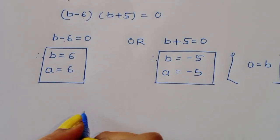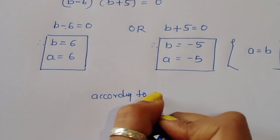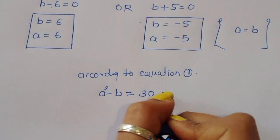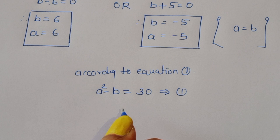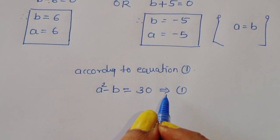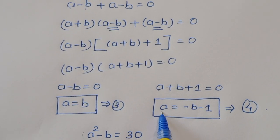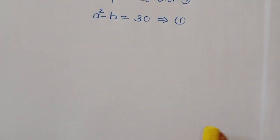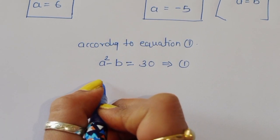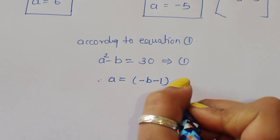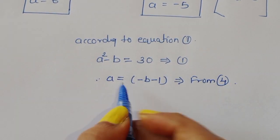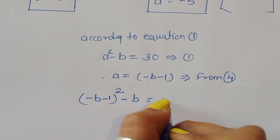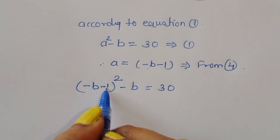Now taking equation 4 (a equals minus b minus 1) and substituting into equation 1 (a squared minus b equals 30): replacing a with (minus b minus 1) gives (minus b minus 1) squared minus b equals 30.